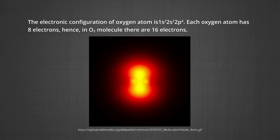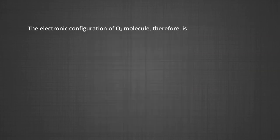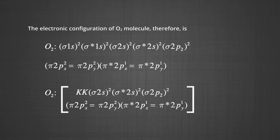In similar fashion, the bonding in the nitrogen molecule can be discussed. Now, the oxygen molecule. The electronic configuration of the oxygen atom is 1s², 2s², 2p⁴. Each oxygen atom has 8 electrons, hence in the oxygen molecule there are 16 electrons. From the electronic configuration of O₂, it is clear that 10 electrons are present in bonding molecular orbitals and 6 electrons are present in anti-bonding molecular orbitals.